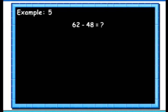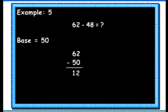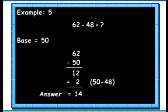Let's see another example. Here we want to subtract 48 from 62. Here we will take the base as 50. Instead of subtracting 48 from 62, we will subtract 50. We get 12. Then we will add 50's complement of 48 to the result, which is 2. So we get the answer as 14.